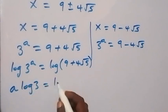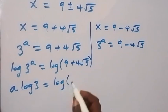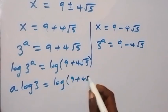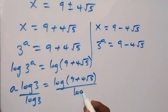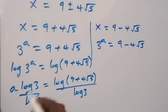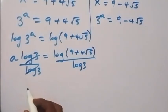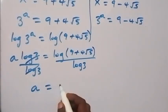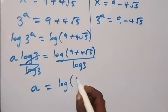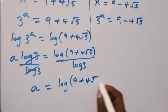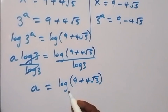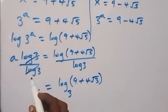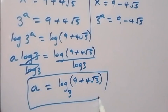Dividing both sides by log 3, the log 3 terms cancel, and we get a equals log of (9 plus 4 root 5) over log 3. Writing this using change of base notation, a equals log base 3 of (9 plus 4 root 5). So here we have the value of a for the first case.